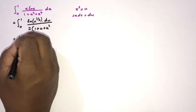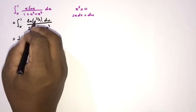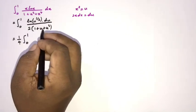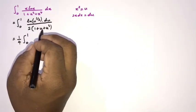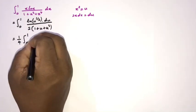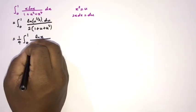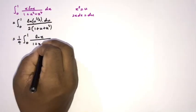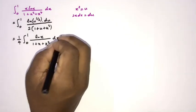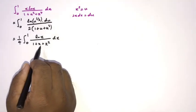We now have (1/4) times the integral from 0 to 1 of ln(u) over (1 + u + u²) du. Since the definite integral is independent of the variable name, we can replace u with x, giving (1/4) integral from 0 to 1 of ln(x) over (1 + x + x²) dx.